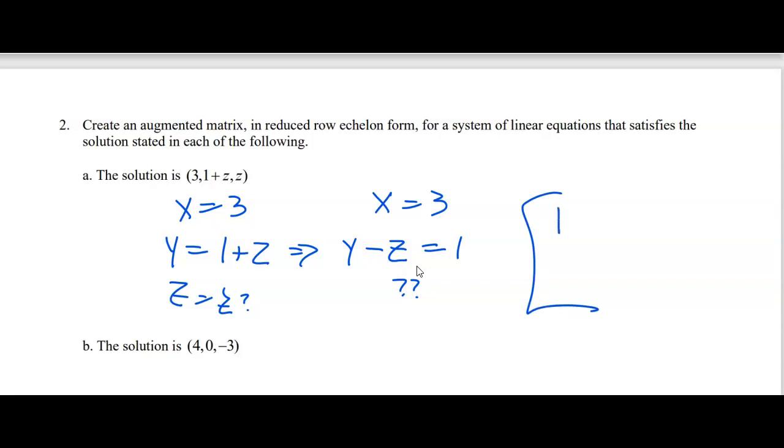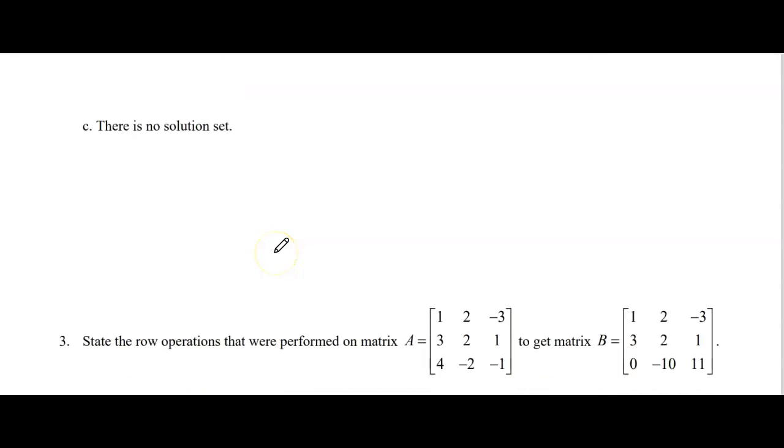X equals 3 would be 1X, no Y's, no Z's, and 3. Y minus Z equals 1 would be no X, 1Y, minus 1Z equals 1. And then we don't have anything about Z. That is a row of zeros. So hopefully this helps you understand the setup of part 2A. Okay, excellent.